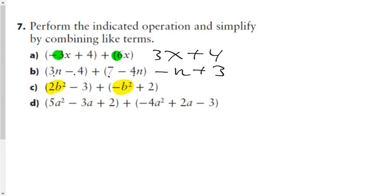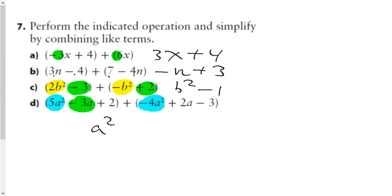2b-squared and negative b-squared make 1b-squared — written without the coefficient of 1. A negative 3 and a positive 2 make a constant of negative 1. For the last one, 5a² and negative 4a² make a², negative 3a and positive 2a make negative a, and positive 2 and negative 3 make negative 1. If you want to bring highlighters to your test to shade like terms, three different colors can make it easier.